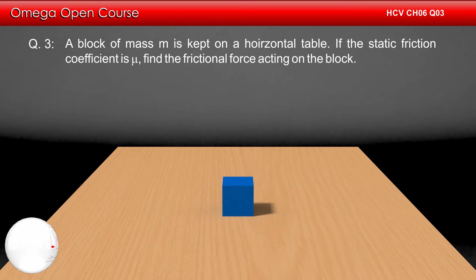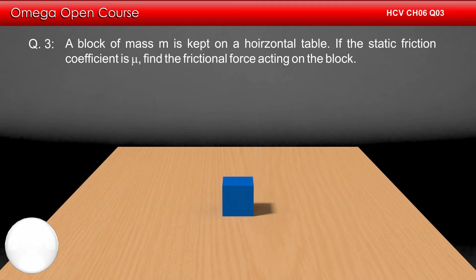A block of mass m is kept on a horizontal table. If the static friction coefficient is mu, find the frictional force acting on the block.